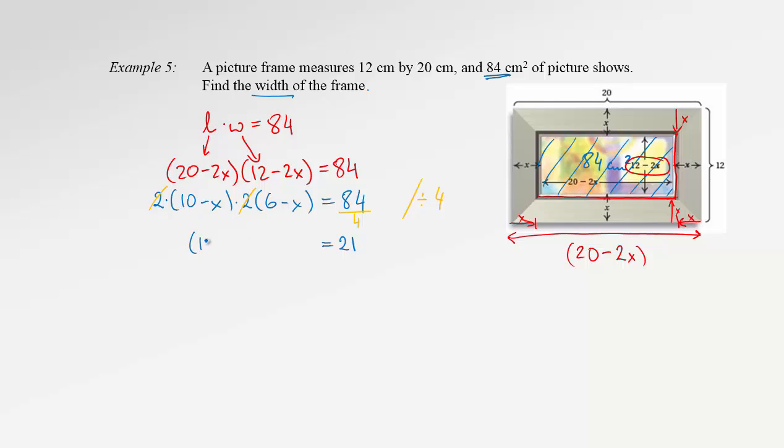Okay, on the left hand side we have two brackets. 10 minus x times 6 minus x. Obviously, in the next step we need to multiply it and bring the 21 to the left, because we wish to have 0 on the right hand side. Okay, let's multiply through foiling process.